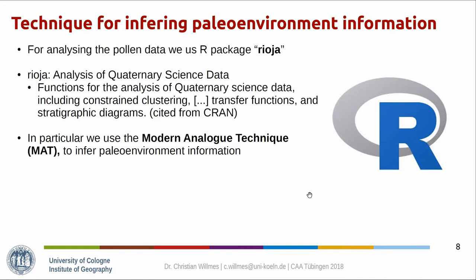As software we use R — much discussed at this conference — and in particular the package Rioja. According to the documentation, it is a set of algorithms and methods designed for working with quaternary science data, including stratigraphic data. From the many algorithms available, we first focused on modern analog techniques, though there is potential to use other techniques with this data later on.